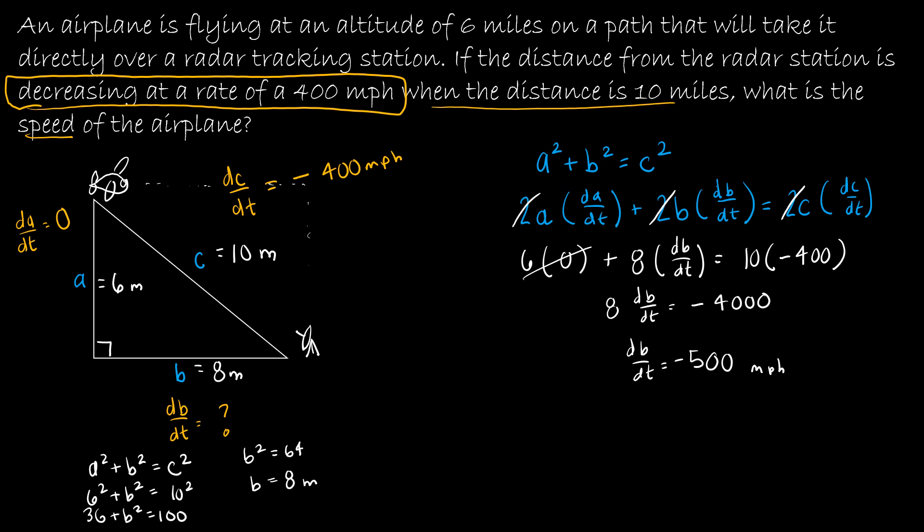You might be concerned: why is the speed negative? But remember, negative velocity just means it's getting closer to something as opposed to further away. The speed of the airplane is 500, positive 500 miles per hour. Even though my result was negative, it makes sense because velocity tells us that distance is getting smaller.